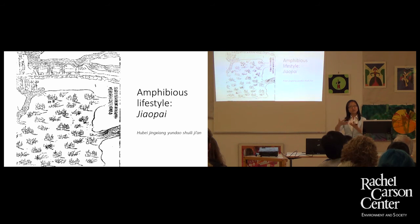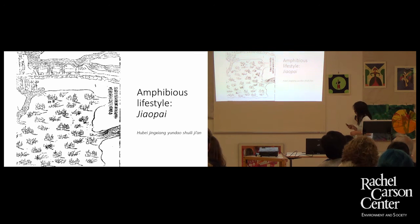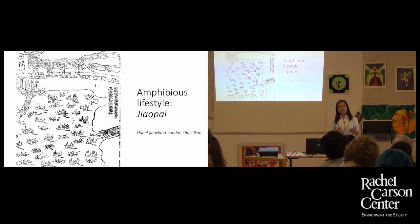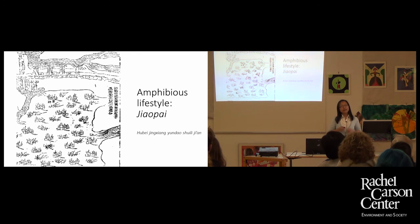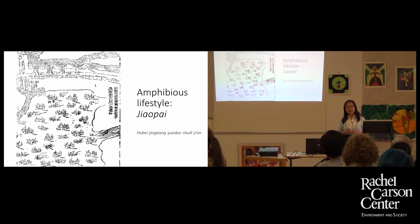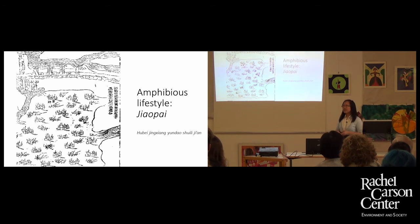The lifestyle here is very flexible — an amphibious lifestyle. When there is no flood, people reside in their houses and conduct agricultural activities, cultivating rice. When floods come, drainage can sometimes last for several years. People abandon their houses, move onto boats, start fishing operations, and rely on aquatic plants. It's a kind of flexible lifestyle adapted to the environment.